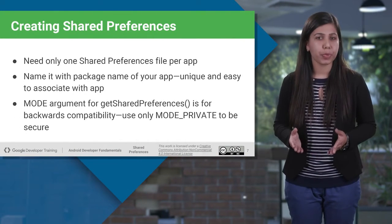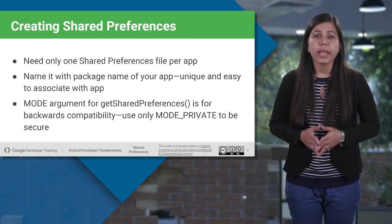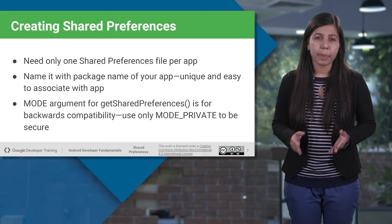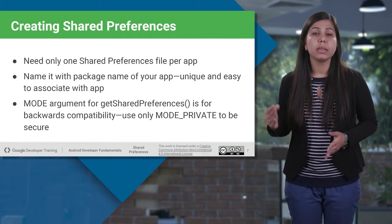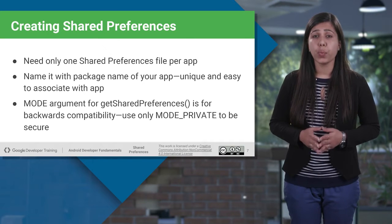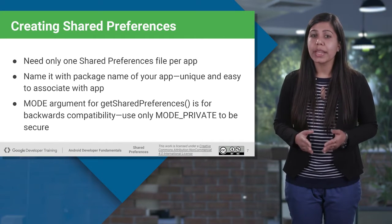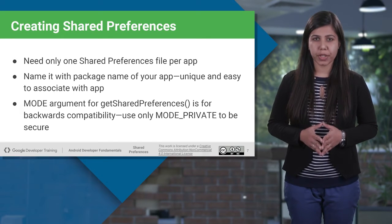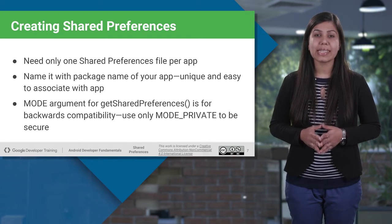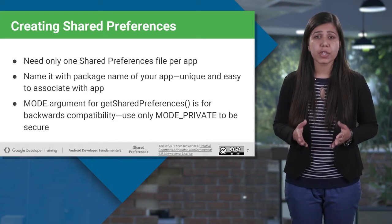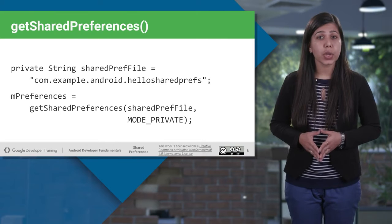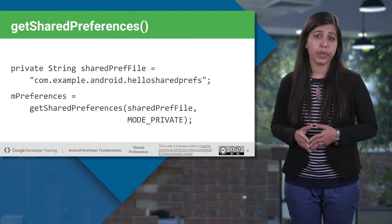So how do we create our Shared Preferences? The first thing we are going to do is create one Shared Preferences file that can be accessed via all application components. Name it with the package name of your app to make it unique and easy to associate. When you want to get values from Shared Preferences, use the GetSharedPreferences method. Shared Preferences provides modes of storing data — such as private mode and public mode — and I suggest storing data in private mode.